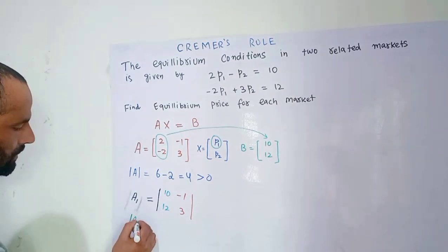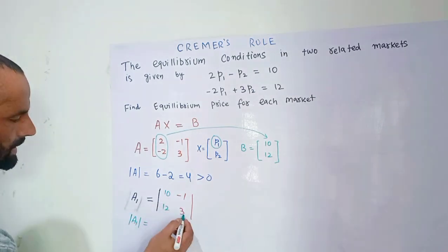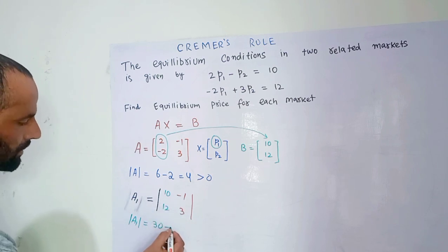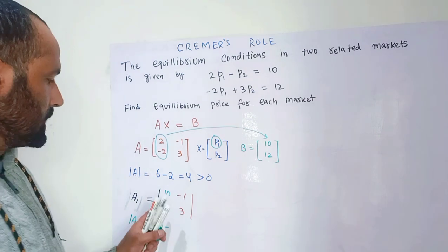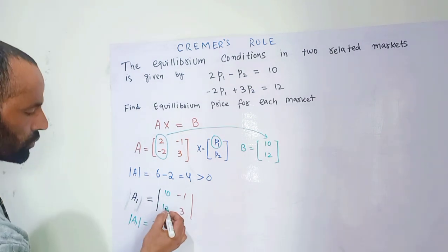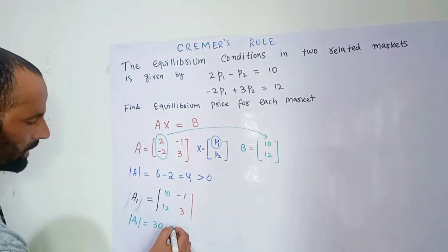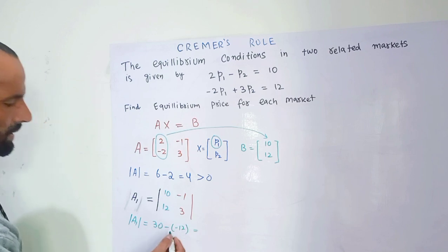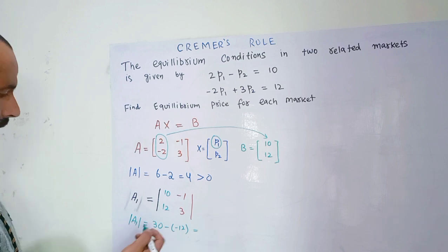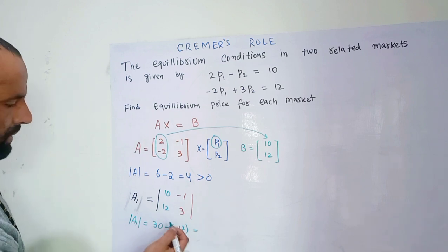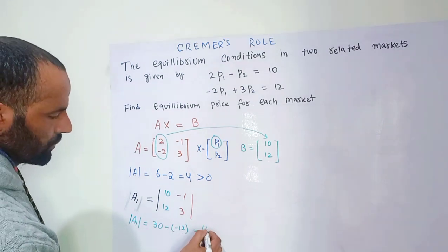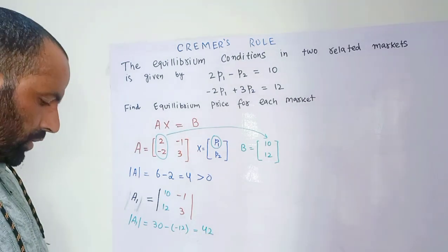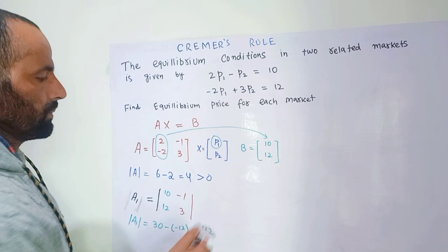We then take the determinant of matrix A1. Multiplying the principal diagonal: 10 times 3 is 30. Subtracting the product of the other diagonal: 12 times minus 1 is minus 12. So 30 minus minus 12 gives us 30 plus 12, which equals 42. So det(A1) equals 42.